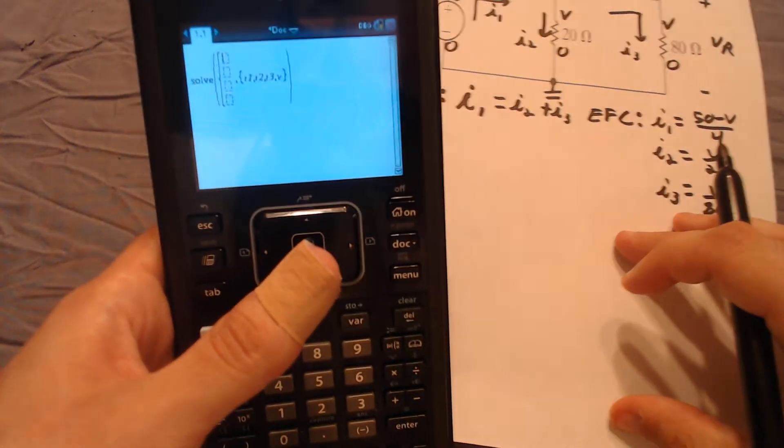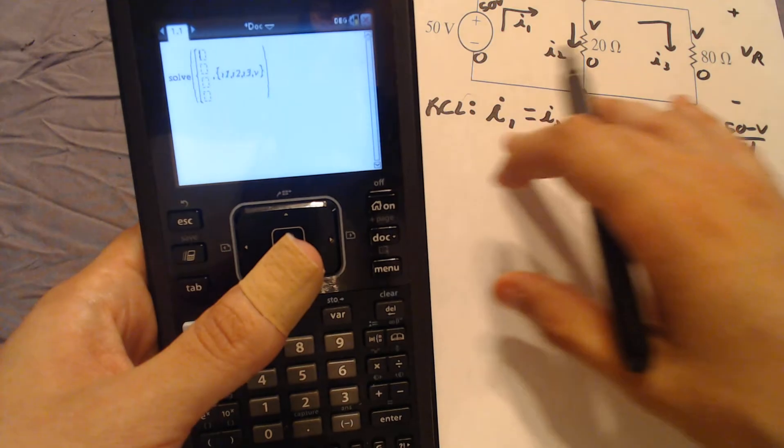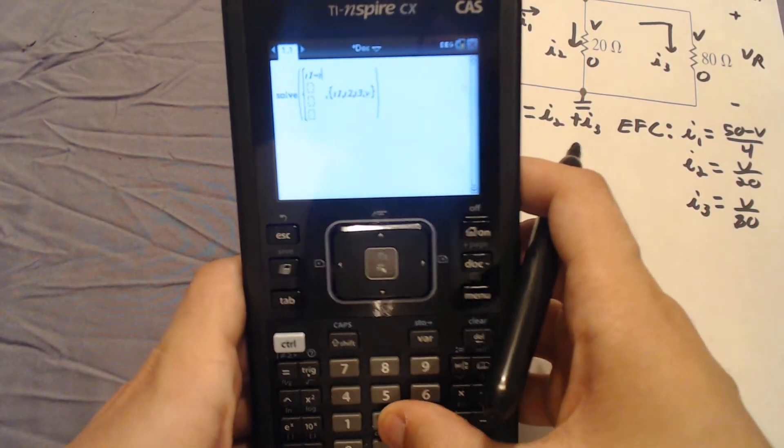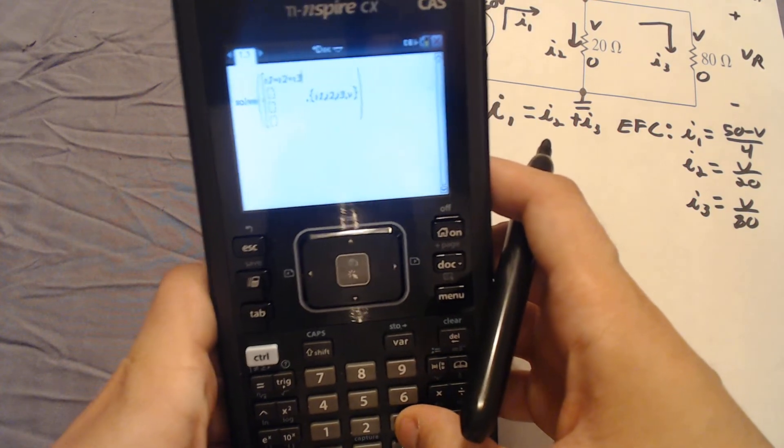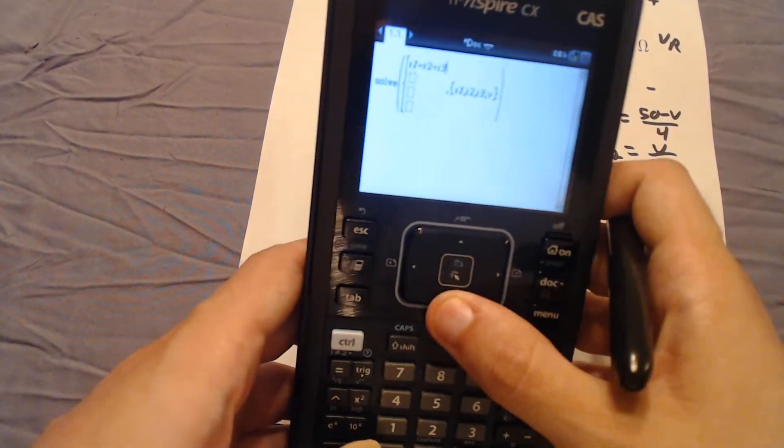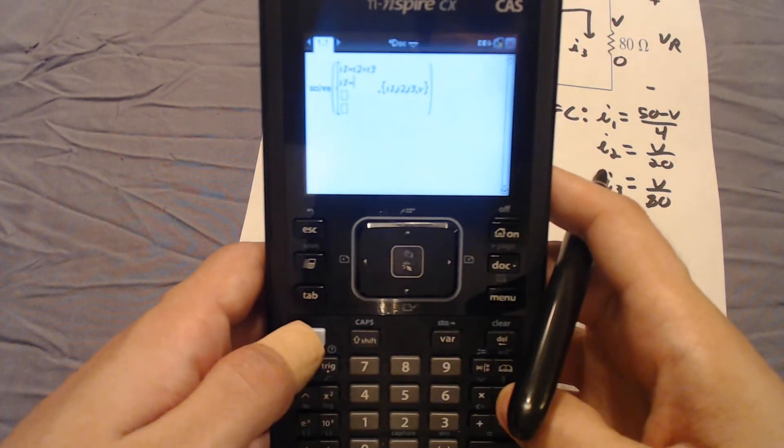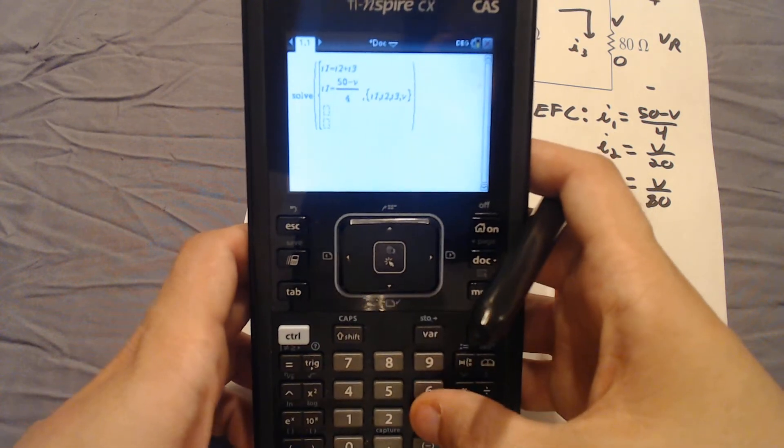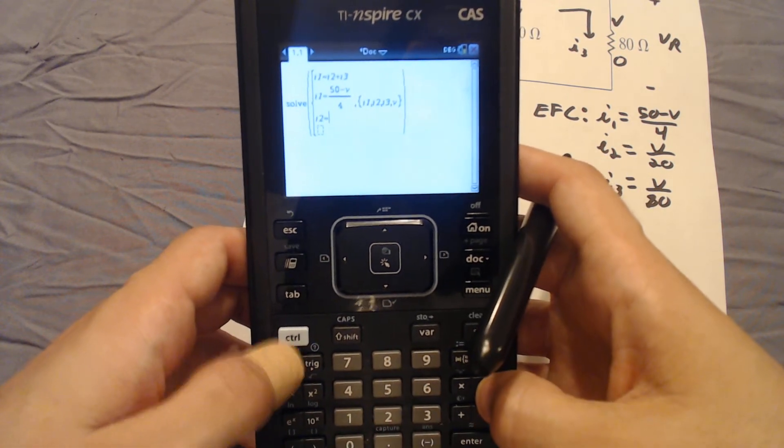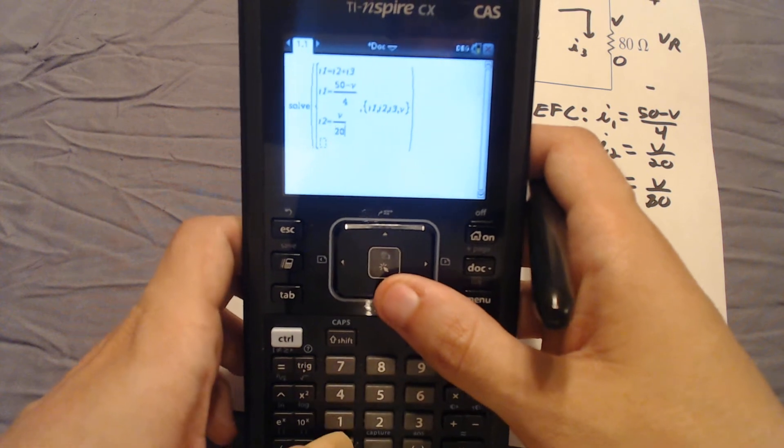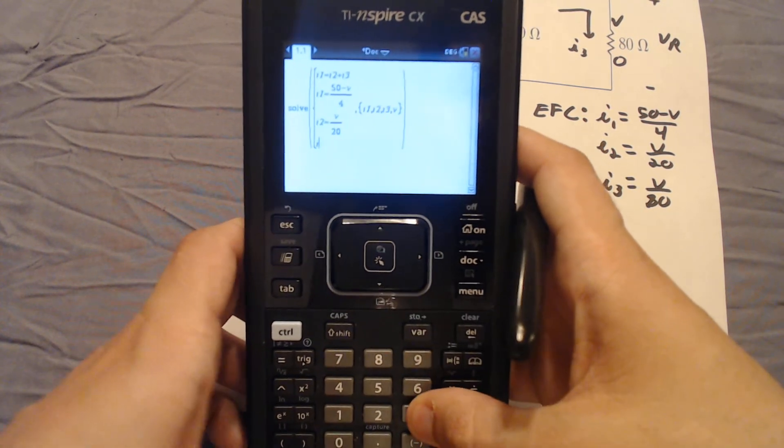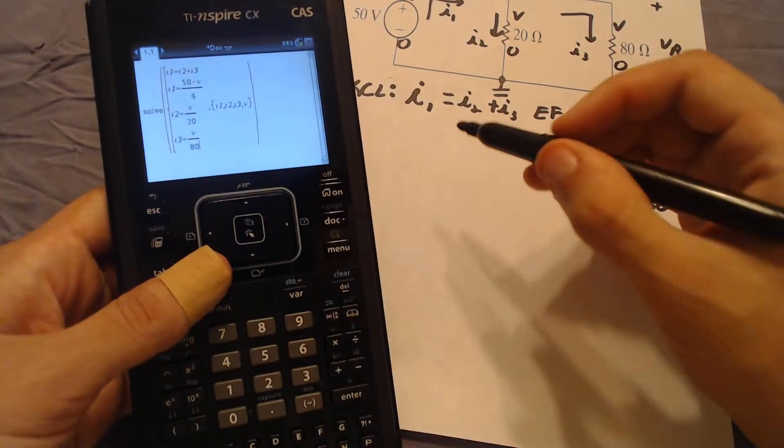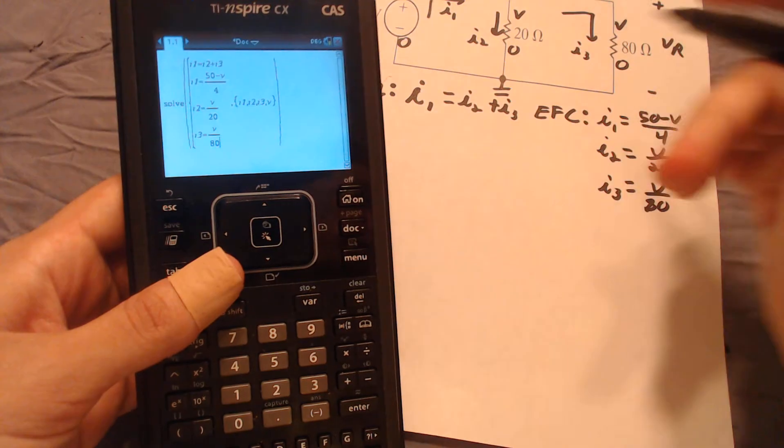So now all you have to do is input the equations that we found earlier using KCL and EFC. So our first equation is going to be I1 equals I2 plus I3. Then our second equation is going to be I1 equals 50 minus V over 4. Then the next equation is going to be I2 equals V over 20. And our last equation is going to be I3 equals V over 80. We just simply put the equations we found earlier into our TI-inspire.